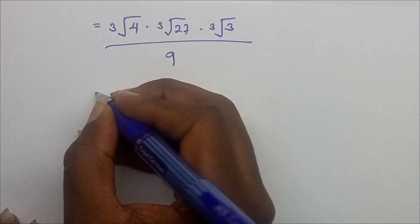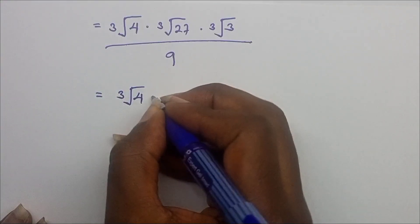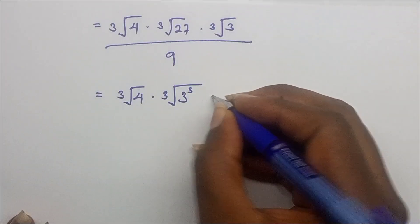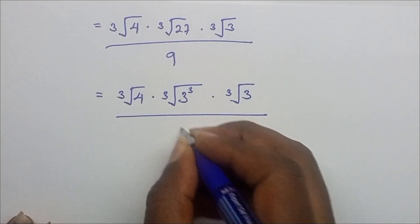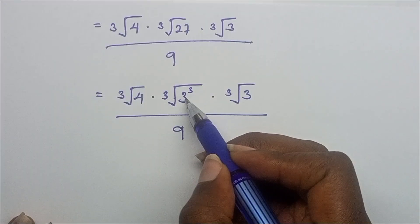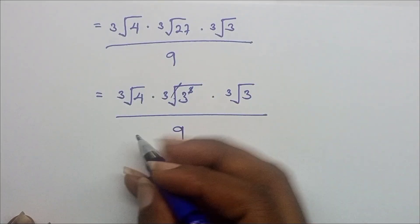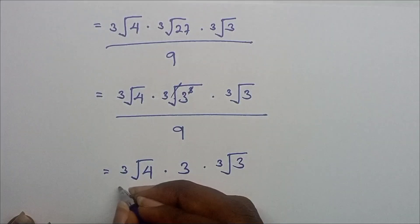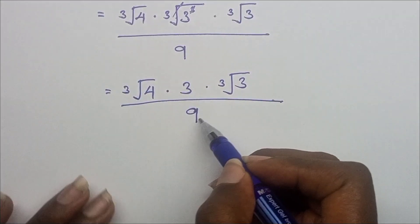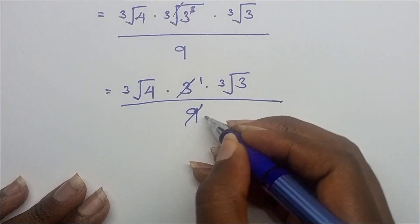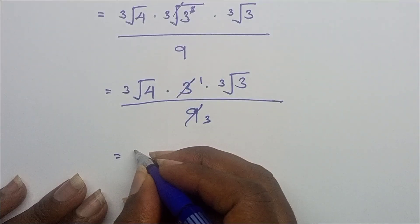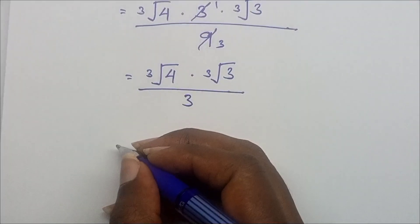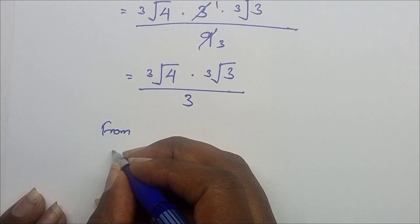Now cube root of 27 equals 3, since 27 = 3³ and the cube root cancels with the power 3. So we have cube root of 4 times 3 times cube root of 3 over 9. Since 9 is divisible by 3, the 3 cancels with 9 to give 3, leaving cube root of 4 times cube root of 3 over 3.